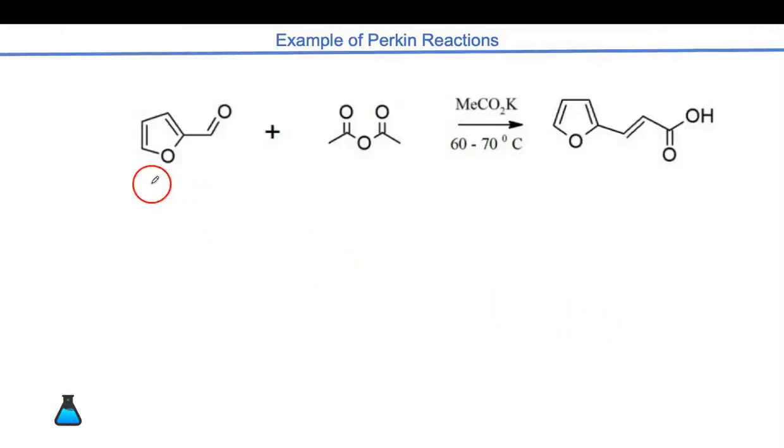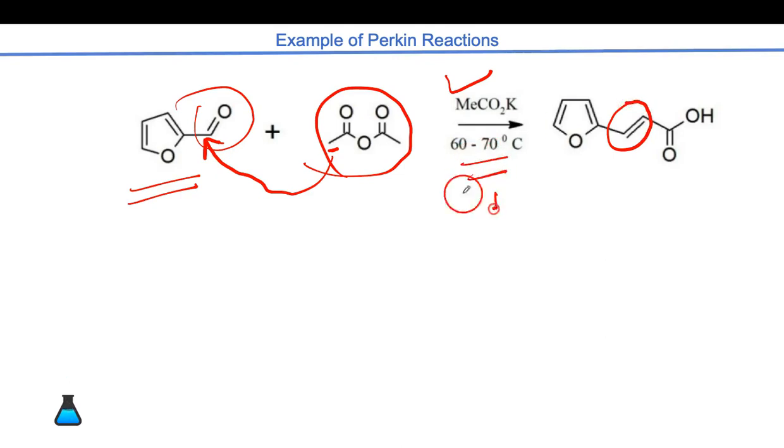Moving to the other example—this is also the same example. Furan consists of aldehyde group which is treated with acetic anhydride in presence of a base. Again, this negative will approach to this carbon, forming one double bond, C-C double bond, after removing water because the temperature is high.